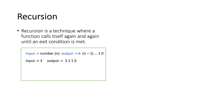Similarly, if the input is 2, the output would be 2, 1, 0. Finally, if the input is 0, then the output would be 0. And as evident from these examples, we can identify our exit condition — that is, if we reach 0, we have to stop calling this function.